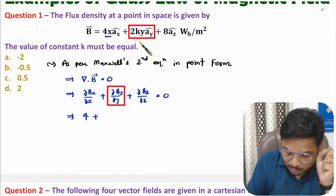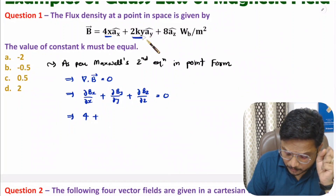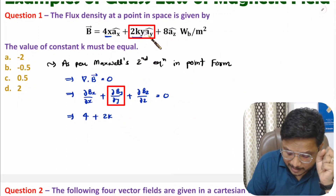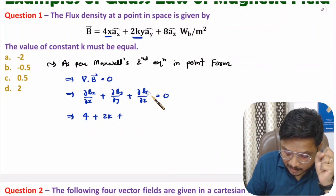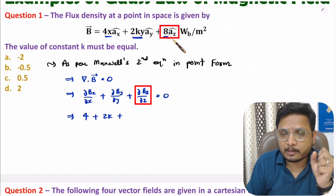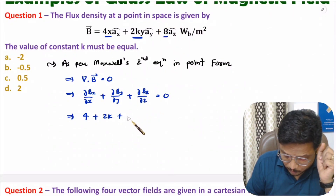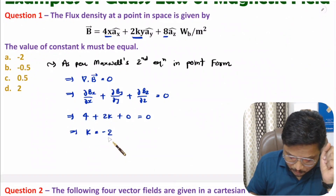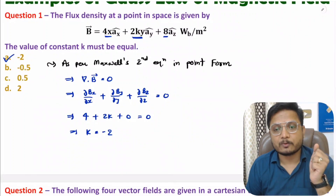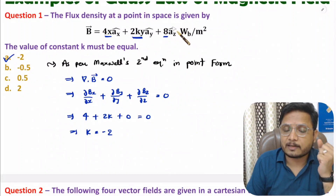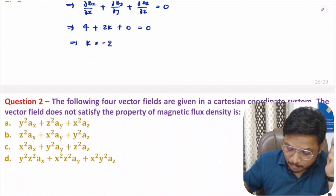So we get 4, plus partial differentiation of the y component with respect to y. The y component is 2ky, so its partial derivative is 2k. Plus partial differentiation of the z component with respect to z — the z component is 8, a constant, so its derivative is 0. Therefore 4 + 2k = 0, giving k = -4/2 = -2. The correct answer is k = -2.